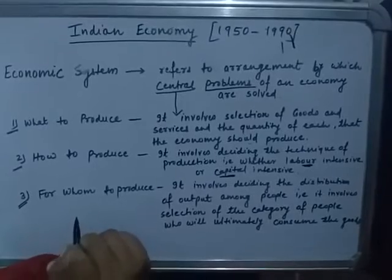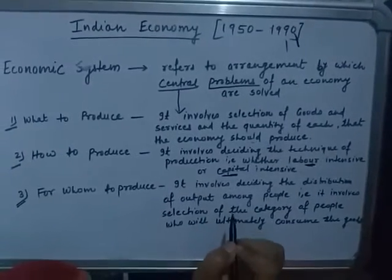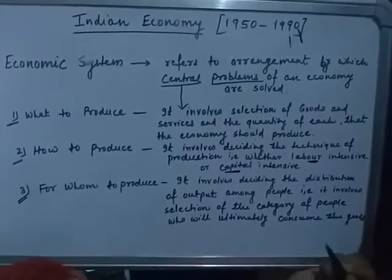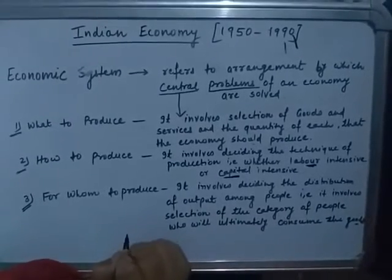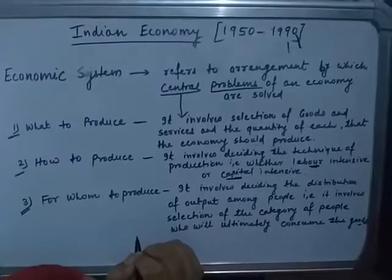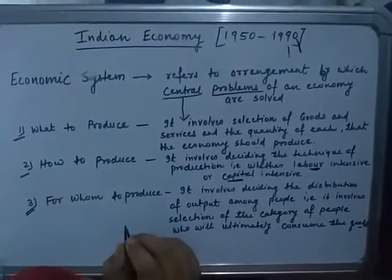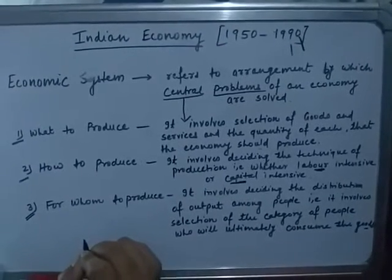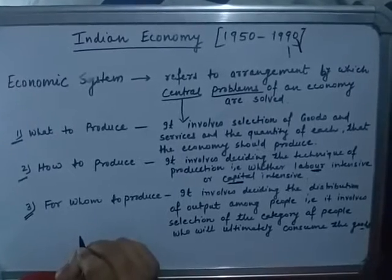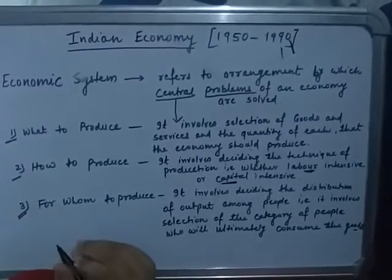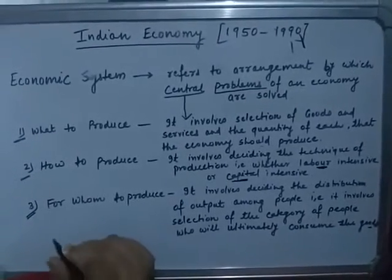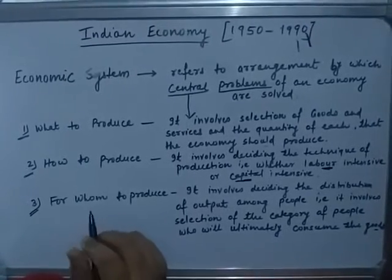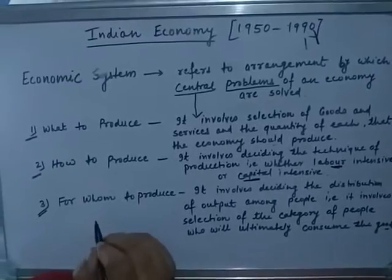The third problem is for whom to produce. It involves deciding the distribution of output among people — that means selecting the category of people who will ultimately consume the goods. For example, there are three kinds of countries in the world: developed, underdeveloped, and developing. India is a developing country. Developed countries need more luxurious goods, developing countries need basic goods, and underdeveloped countries have different requirements. So it is necessary to decide for whom to produce, and for a developing country like India, it is necessary to decide which goods and services are required.